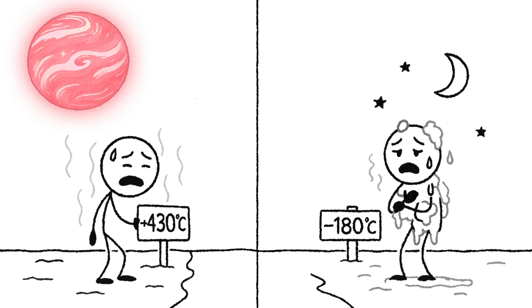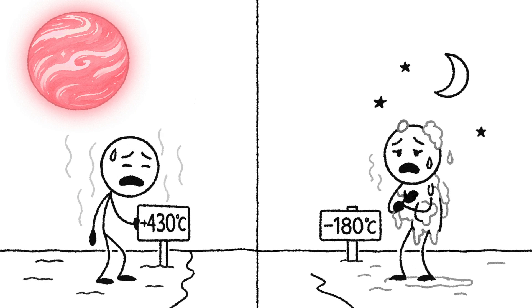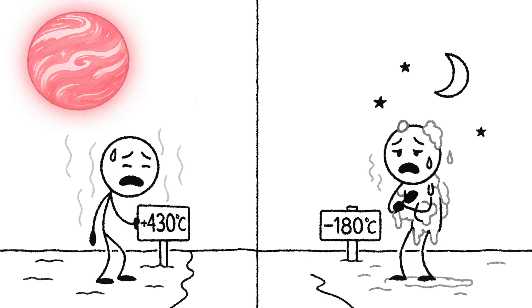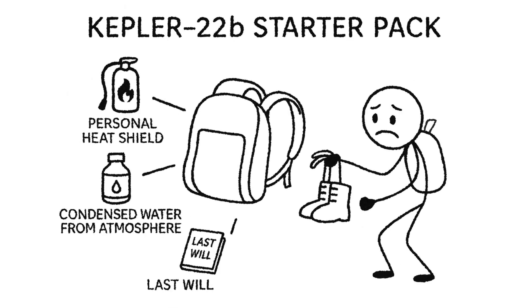But if it arrives with little or no atmosphere, that's a different kind of nightmare. Without insulation, temperatures would swing violently from searing heat under the sun to bitter cold the moment night falls. Think blistering days and frozen nights on repeat. You might dodge the pressure, but you'd need thermal protection, artificial air, and probably a heating system strapped to your back.